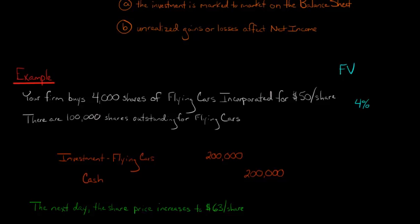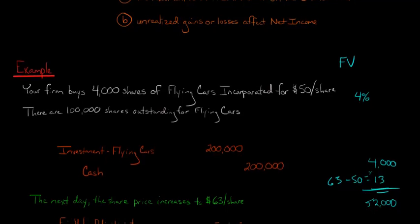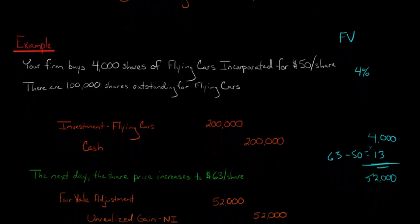But let's pretend that the very next day, the share price jumps up to $63 a share. So you made a good investment here, because now we see that it was originally at 50, but now it's at 63. So you've had a gain per share of $13. And you own 4,000 shares, so if we multiply 4,000 times 13, we get 52,000. So you're $52,000 wealthier. You don't actually have the cash yet. You haven't sold the investment, but we can tell that you've had a gain.